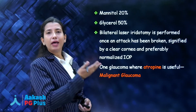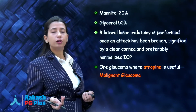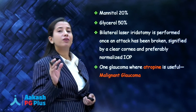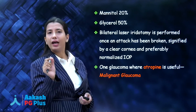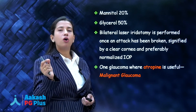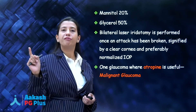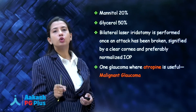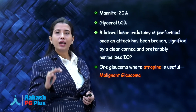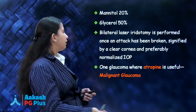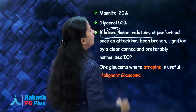Then we can give mannitol and glycerol, which are osmotic agents — they reduce vitreous volume and reduce intraocular pressure. Once pressure has reduced, you must do laser iridotomy and/or surgical iridectomy of not only the involved eye but also the fellow eye to prevent future attacks. The definitive treatment once pressure has come down and the cornea has become clear is bilateral laser iridotomy.